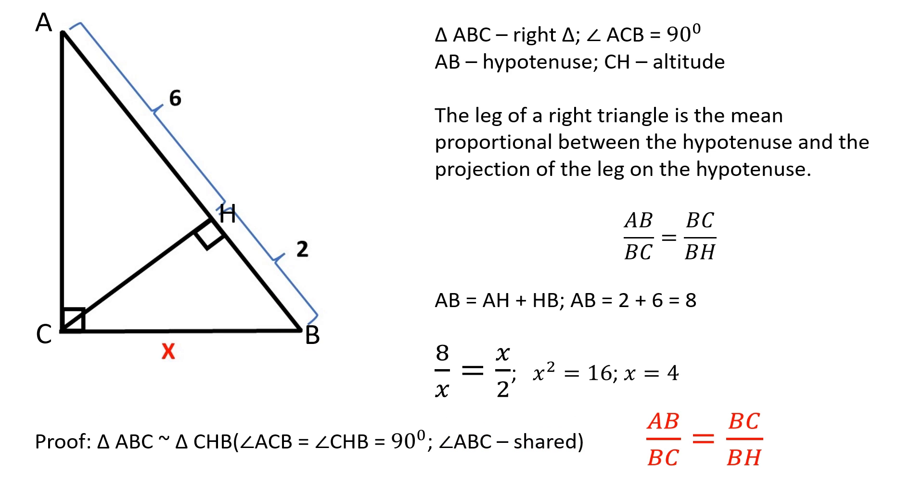In similar triangles the corresponding sides are proportional. AB over BC is equal to BC over BH which proves our original statement.